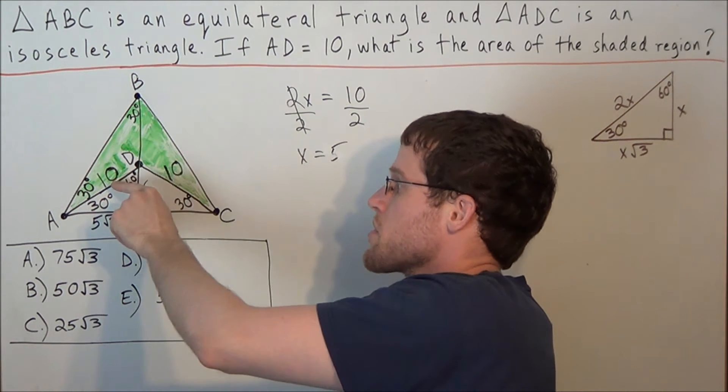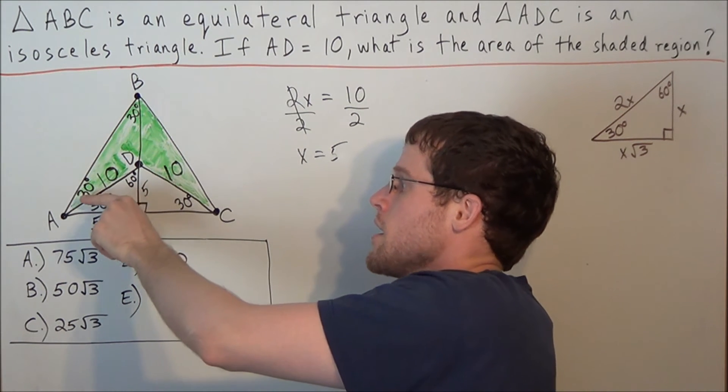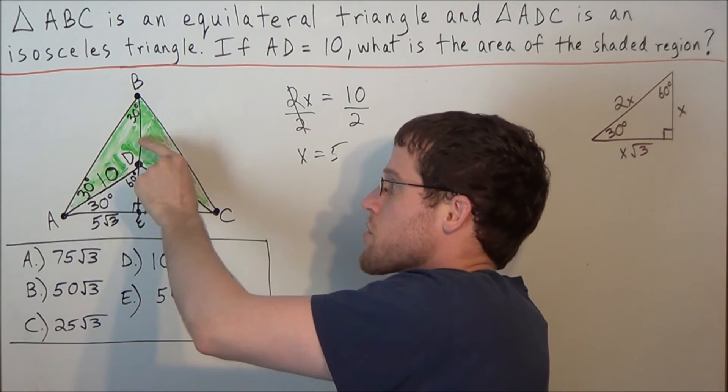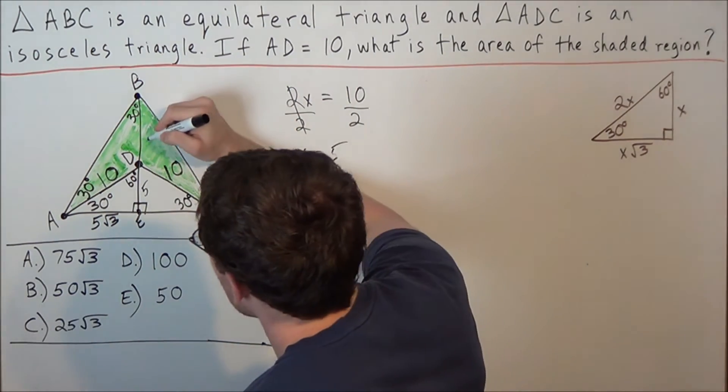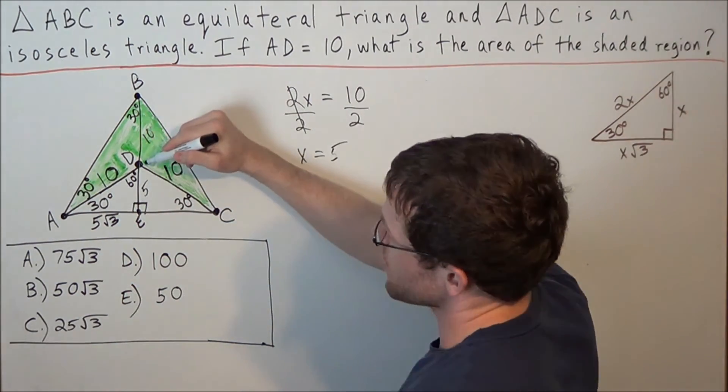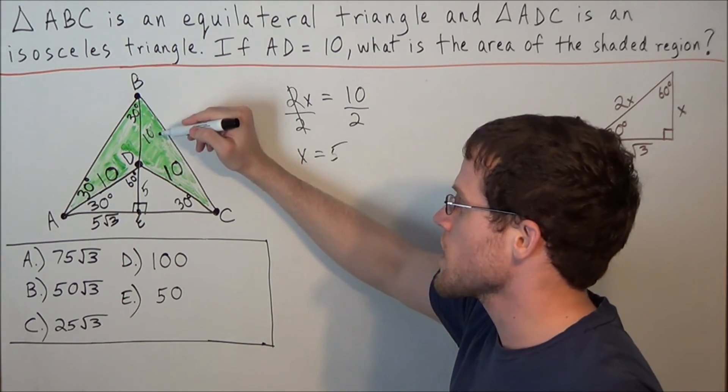So if the side opposite this 30 degree angle is 10, then the side opposite the other 30 degree angle also has to be 10. So we just found that side DB is equal to 10 units.